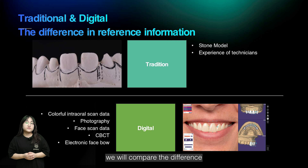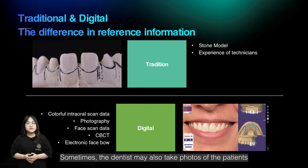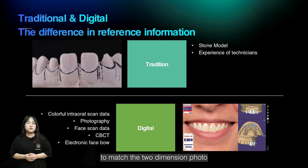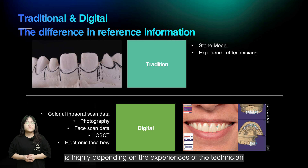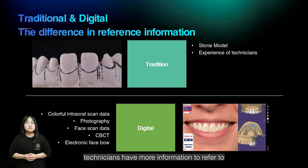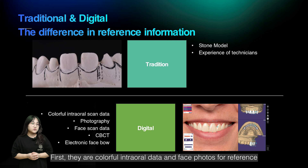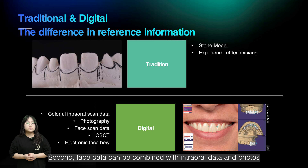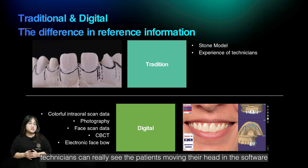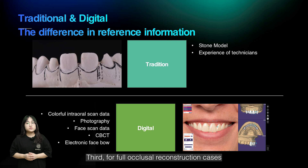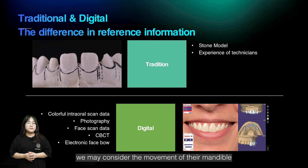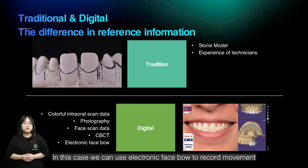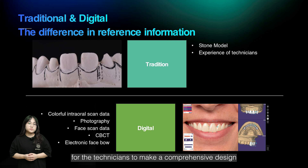In this slide, we will compare the difference in reference information between traditional and digital aesthetics. In traditional aesthetics, technicians only have stone models, and sometimes the dentist may take photos of the patients. Matching a two-dimensional photo with a three-dimensional design is quite difficult, and the quality of the restoration is highly dependent on the experience of the technician. In digital aesthetics, technicians have more information to refer to: colorful intraoral data and face photos, face data combined with intraoral data and photos so technicians can see the patient moving their head in the software, and for full occlusal reconstruction cases, CBCT data can serve as a guideline. For some patients, we may also consider mandibular movement, in which case we can use an electronic facebow to record the movement. All this information greatly helps technicians make a comprehensive design.